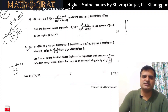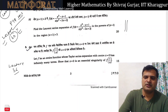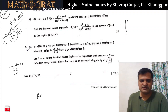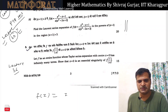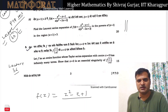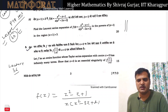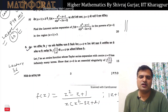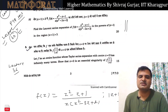So let us see. We are given that f(z) equals z² - z + 1 divided by z(z² - 3z + 2), and we are asked to find the expansion in the powers of (z+1) in the region |z+1| > 3.